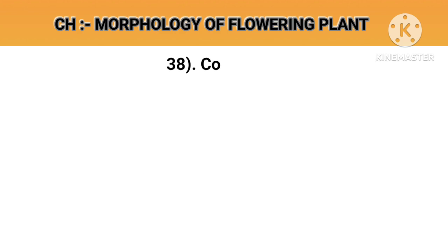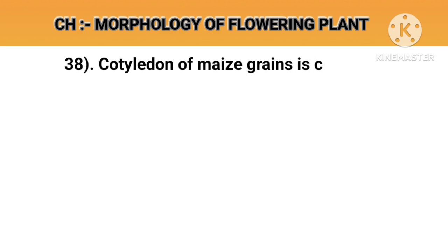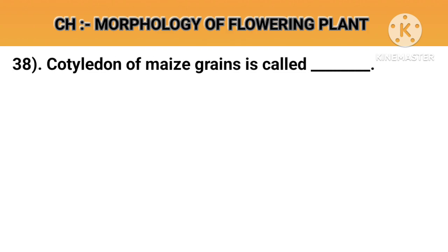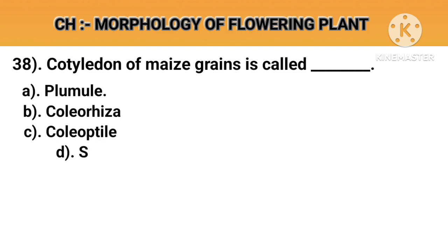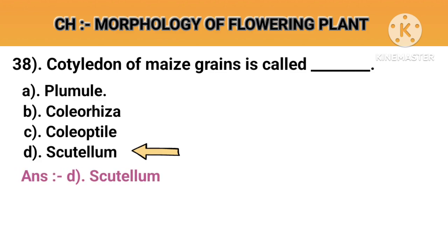Question number 38. Cotyledon of maize grain is called. Option A: Plumule. Option B: Coleoptile. Option C: Coleorhiza. Option D: Scutellum. Answer D: Scutellum.